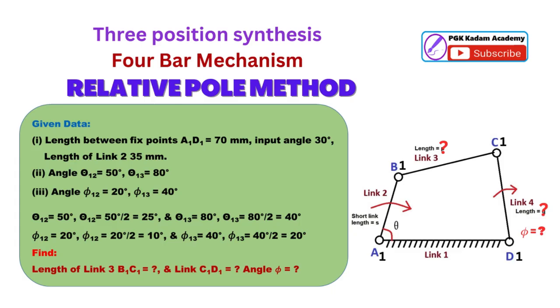Length between fixed points A1D1 equal to 70 mm, which is fixed link 1. Input angle theta equal to 30 degrees. Length of link 2 equal to 35 mm.